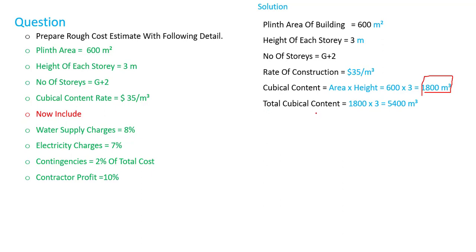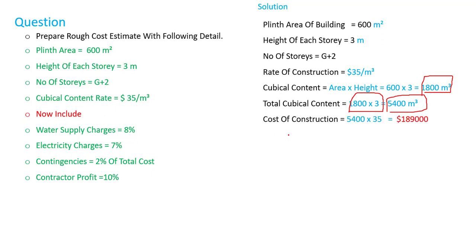The total cubic content equals 1800 multiplied by 3 stories, giving us 5400 cubic meters. The cost of construction: the unit rate is $35 per cubic meter, so we multiply it by the total cubic content.